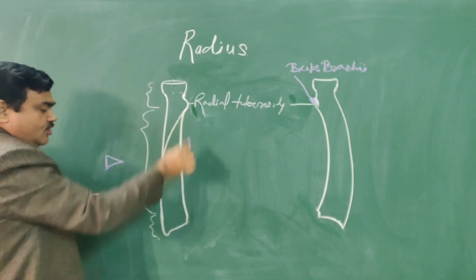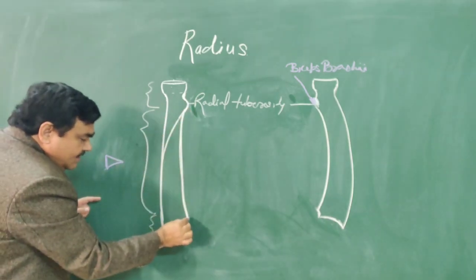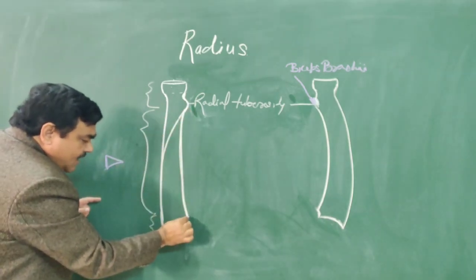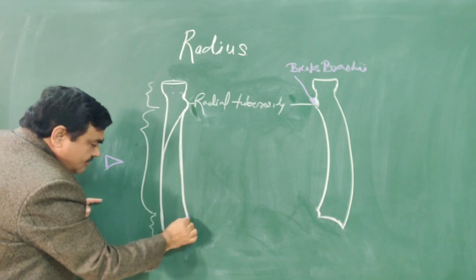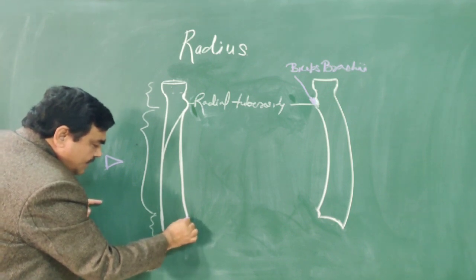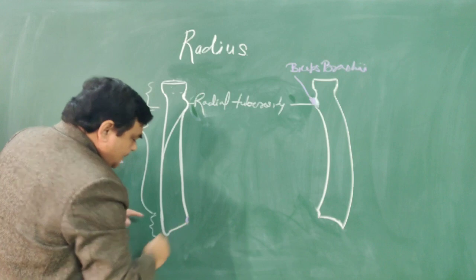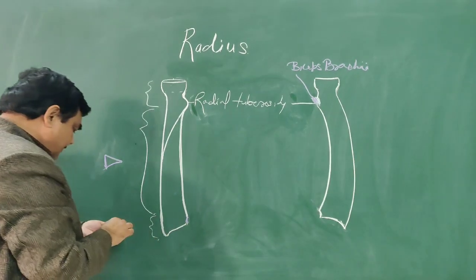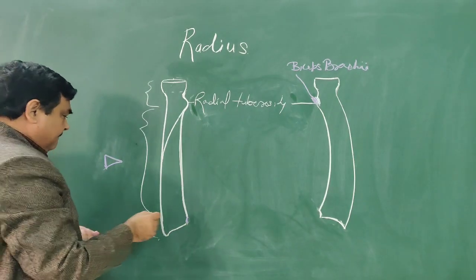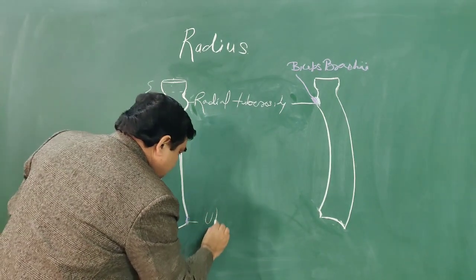The anterior border extends from the radial tuberosity to the ulnar notch, for the head of the ulna. This is the anterior notch for the head of the ulna.